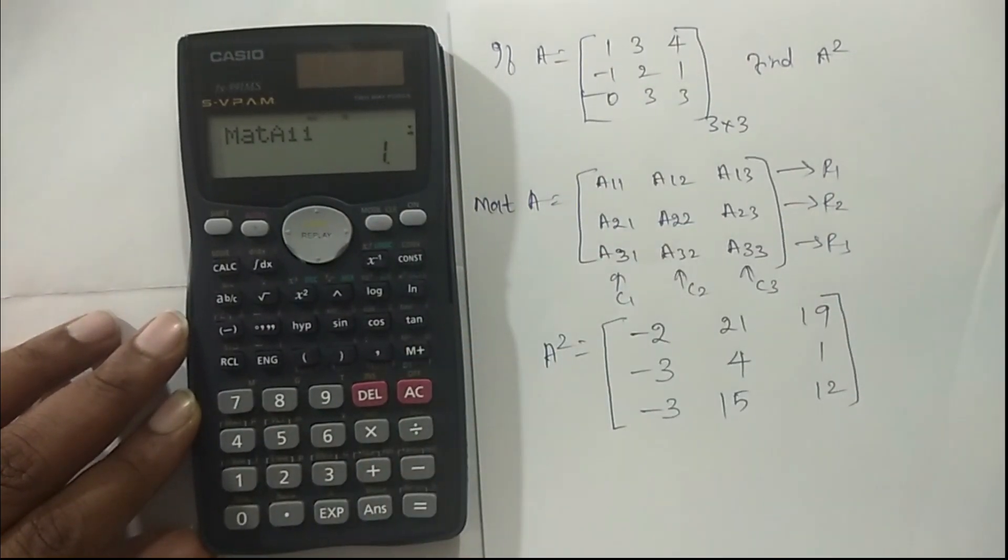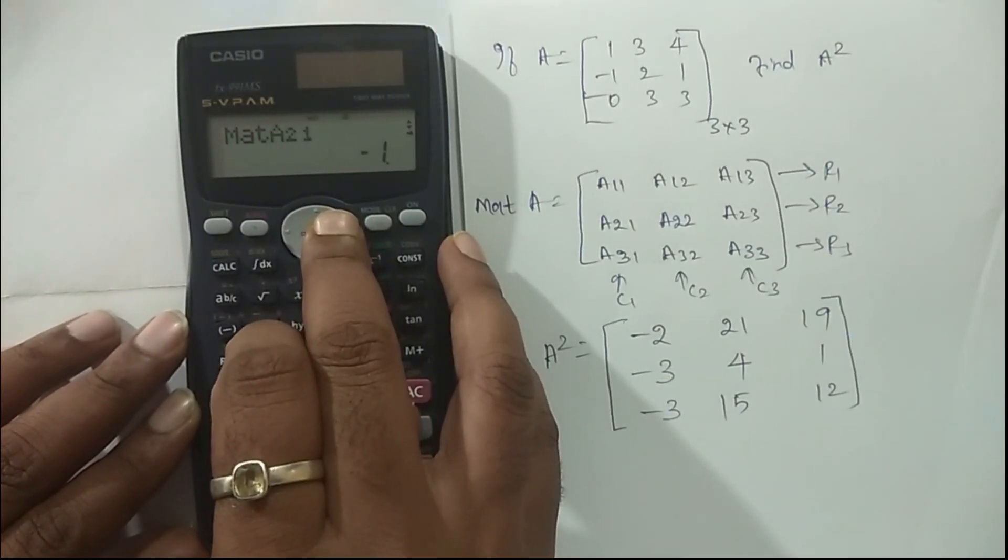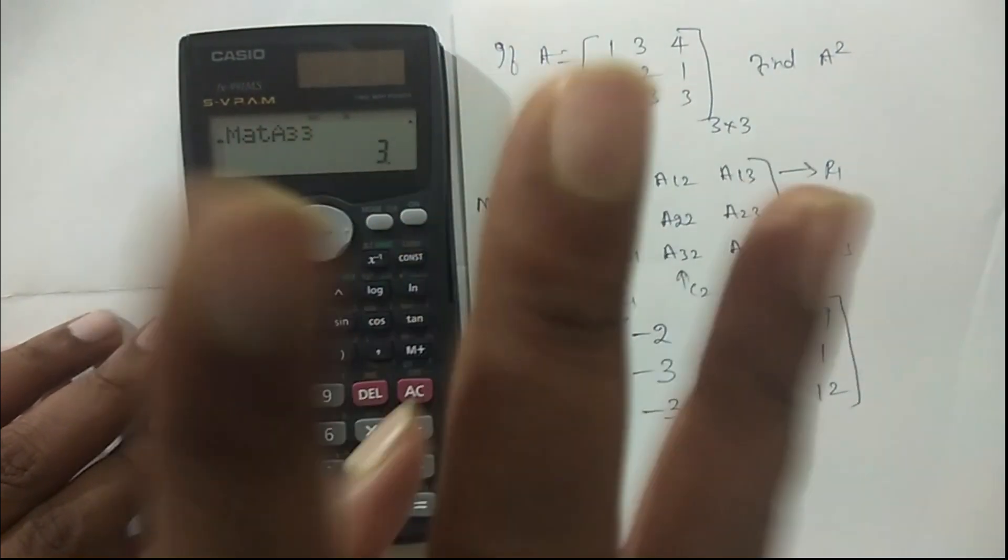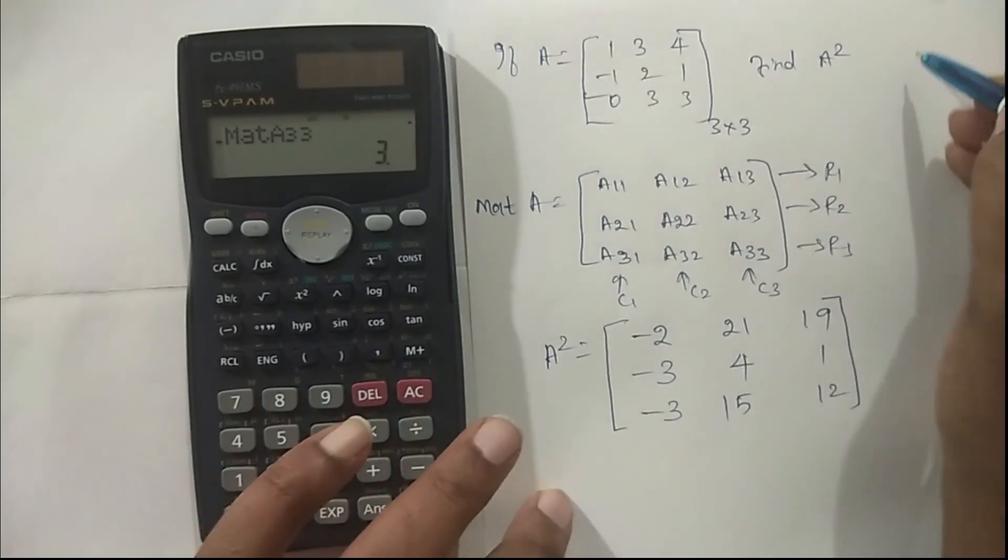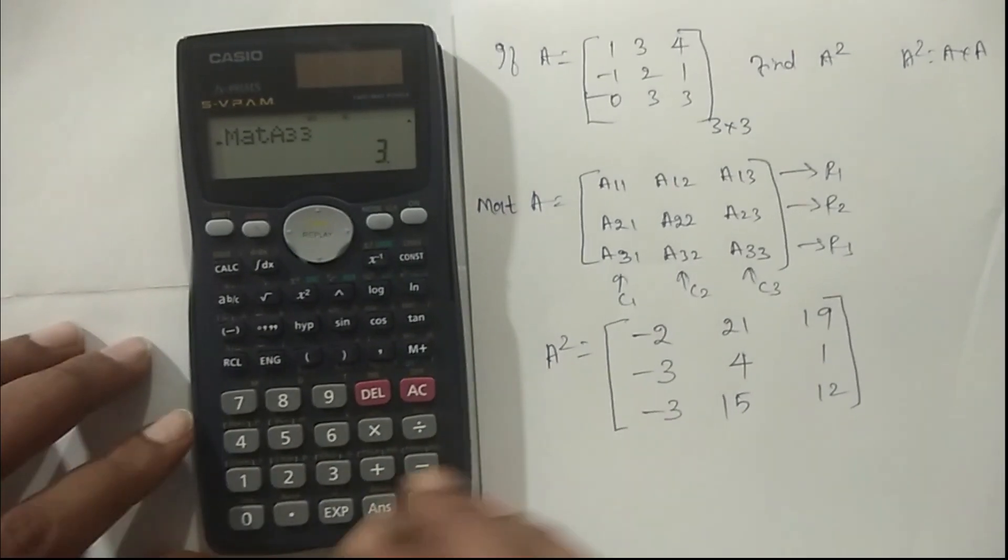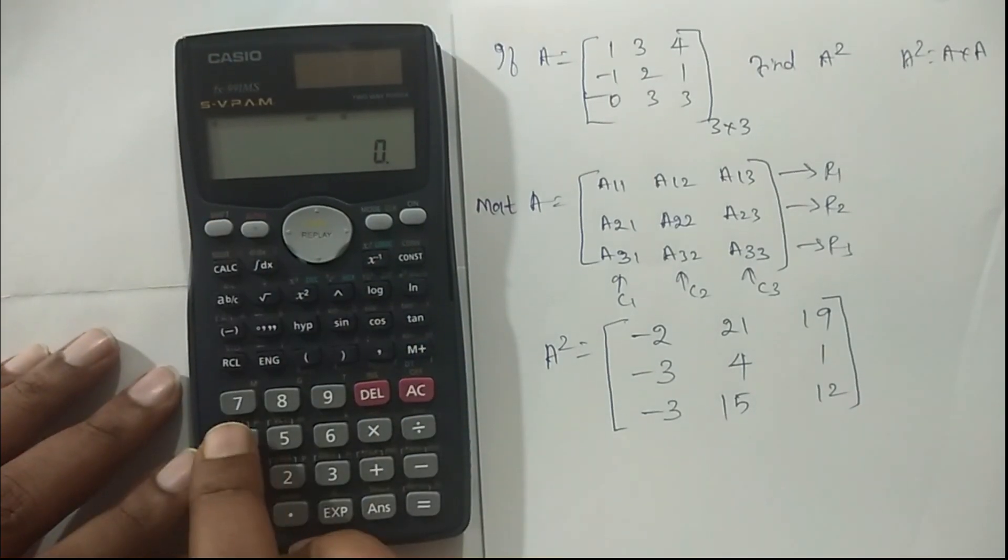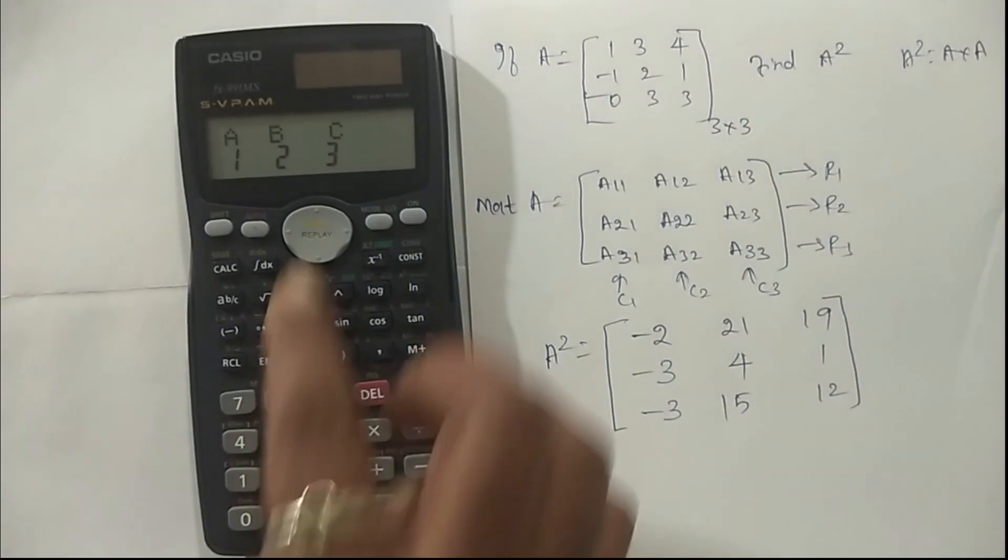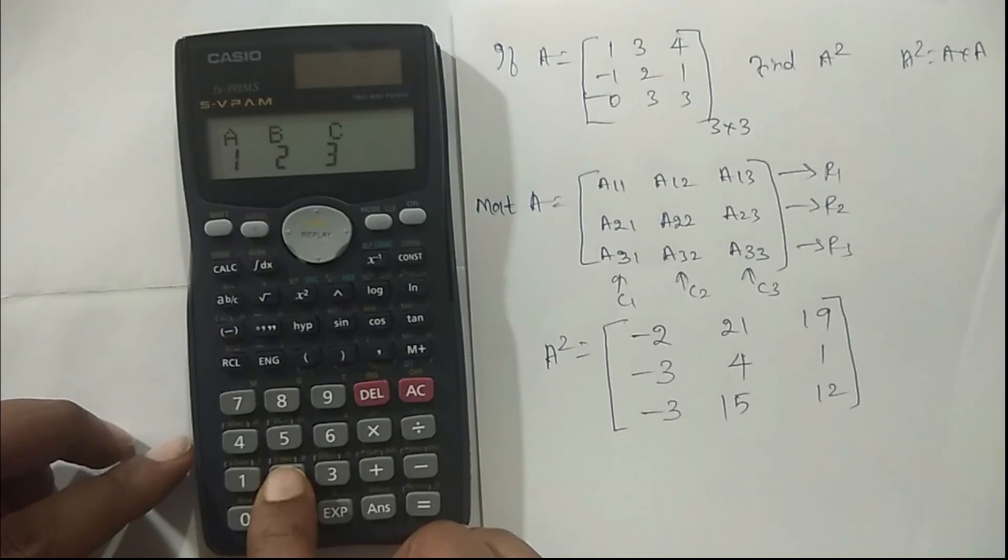If you want, you can cross-check. Scroll and press to see all elements. A21 is minus 1 and A22 is 2. Matrix A is entered. Now to find A square, which is A into A, the same matrix is multiplied by itself. Again, click AC and enter matrix A.